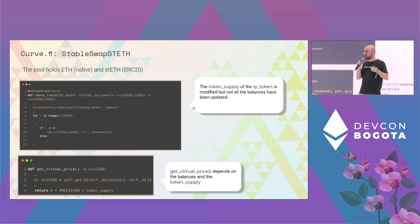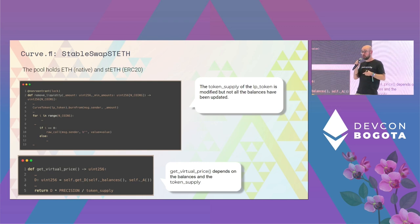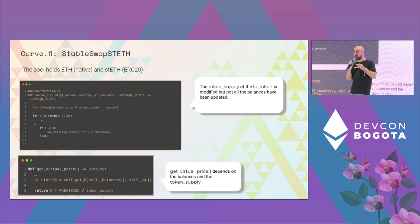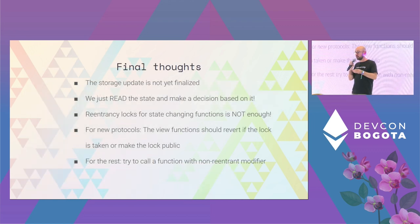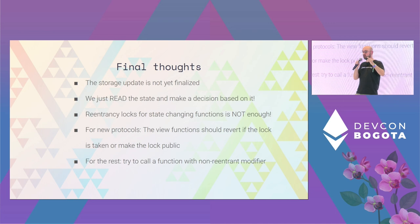This function is used to give an approximation of the value of the LP token. Imagine a protocol that holds these LP tokens — during this attack, the price of the LP token is pumped, and the protocol will think that it holds more money than it should. Read-only re-entrancy is still a re-entrancy in the sense that the storage update is not fully finalized, but the big difference is that we read the state — we don't try to access a function that modifies the state.